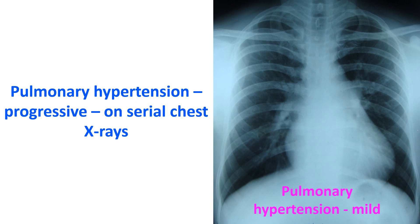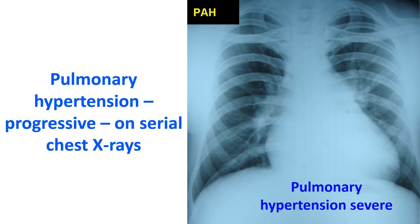Progressive pulmonary hypertension seen on serial chest X-rays. The initial chest PA view shows mild prominence of the main pulmonary artery segment, with the right atrial contour also slightly prominent. In the X-ray taken after several years, the main pulmonary artery and branch pulmonary arteries are more prominent, as is the right atrial contour. Doppler echocardiography documented the presence of severe pulmonary hypertension. There is some difference in penetration levels and positioning between the two films.